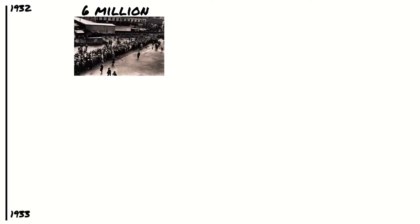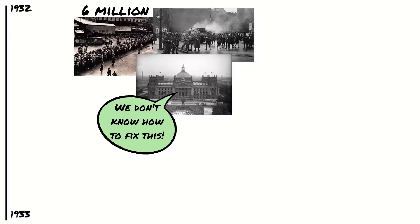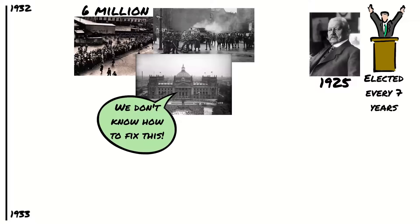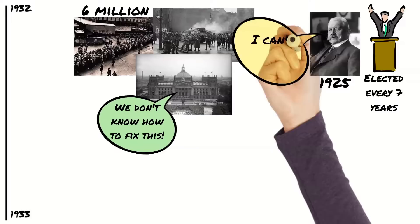Between 1930 and 1932 life in Germany just got worse and worse. By 1932, 6 million Germans were out of work. There was violence on the streets and the government seemed incapable of doing anything about it. The President was elected every 7 years and Paul von Hindenburg had become President in 1925, so in 1932 he was up for re-election. By now Hindenburg was 84 years old and was ill and frail, but he did not feel he could retire with Germany in such a state.